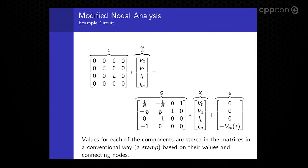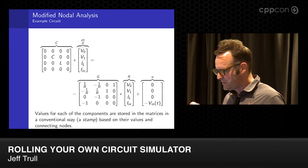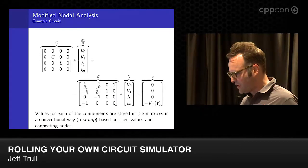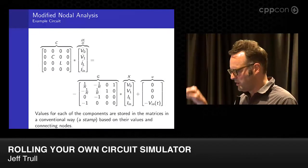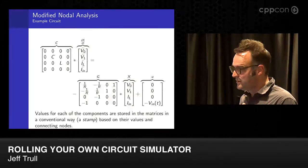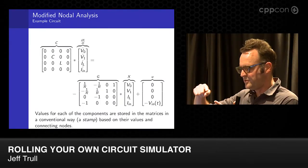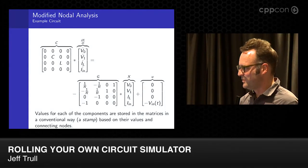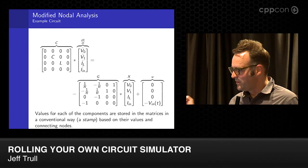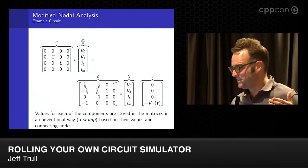This is what it looks like. Instead of two differential equations and two variables, we now have four differential equations and four variables. But in return for that increased verbosity, we have a standard format we can mechanically put information into. If you look at the G matrix, you'll see a pattern of one-over-R values — four of them — that's what we call the stamp of the resistor component. The user can supply any resistor, simply specify its value and the nodes it connects between, and we have a mechanical way of placing that in the matrix. Put it all together and you have a correct system of differential equations representing the circuit, created mechanically.